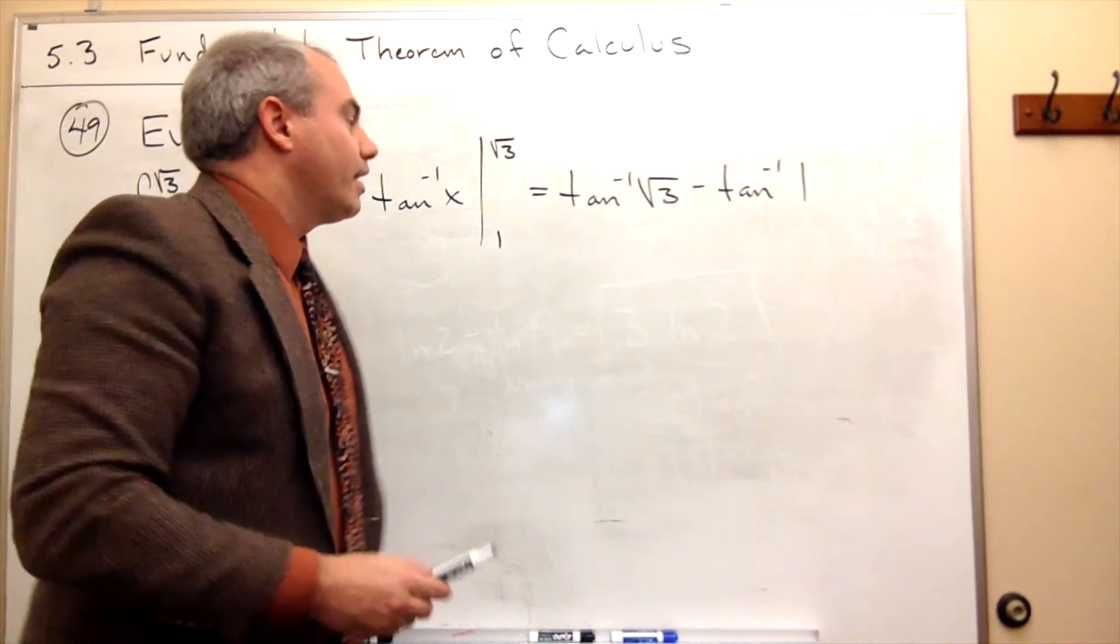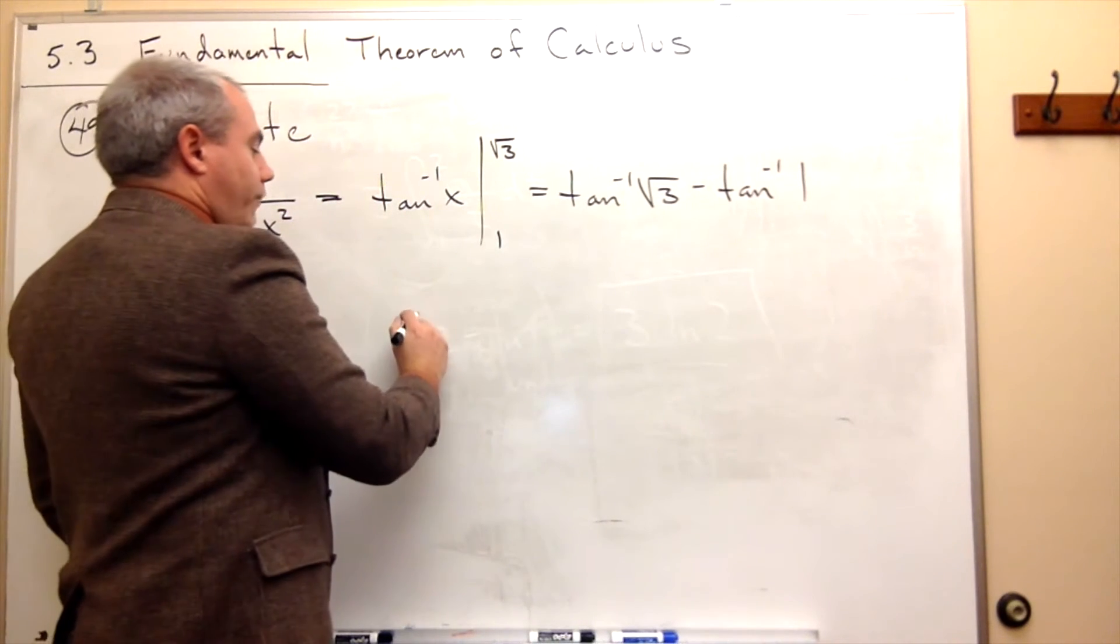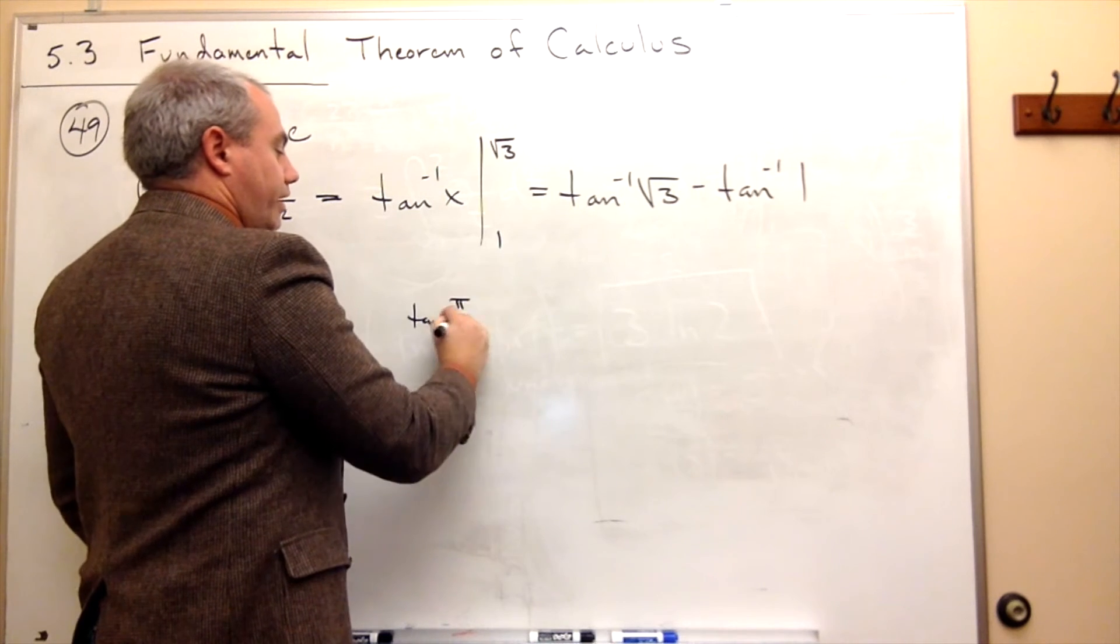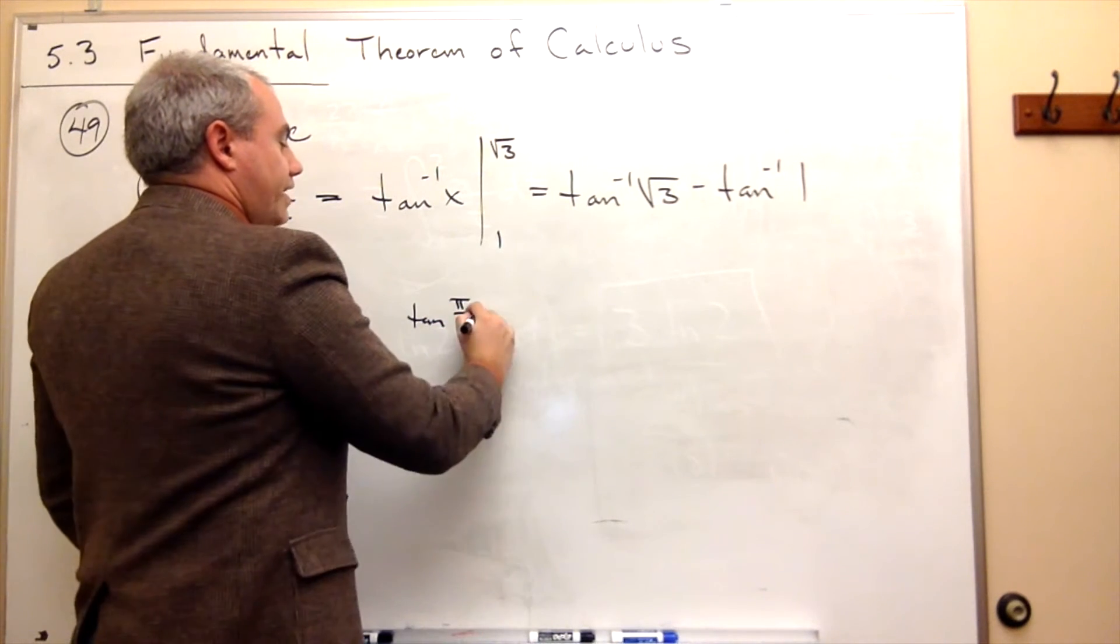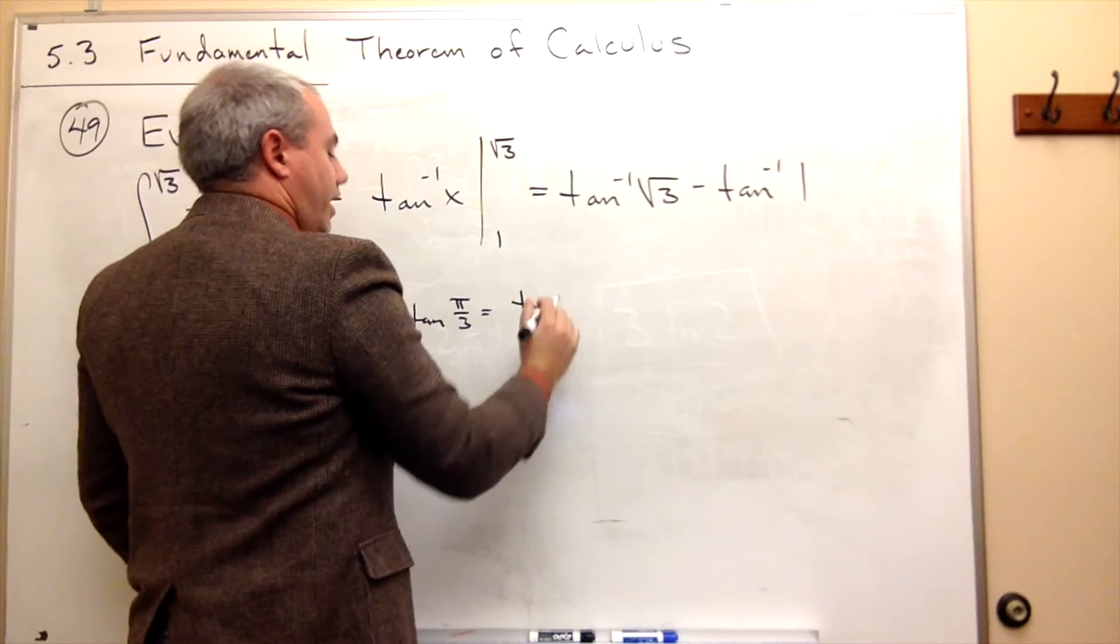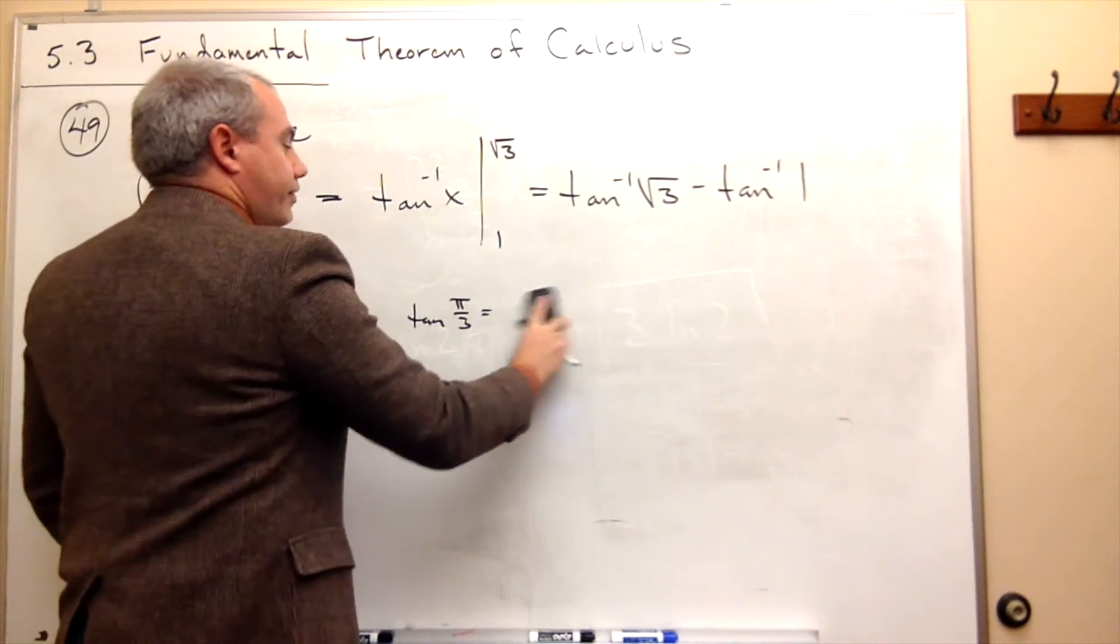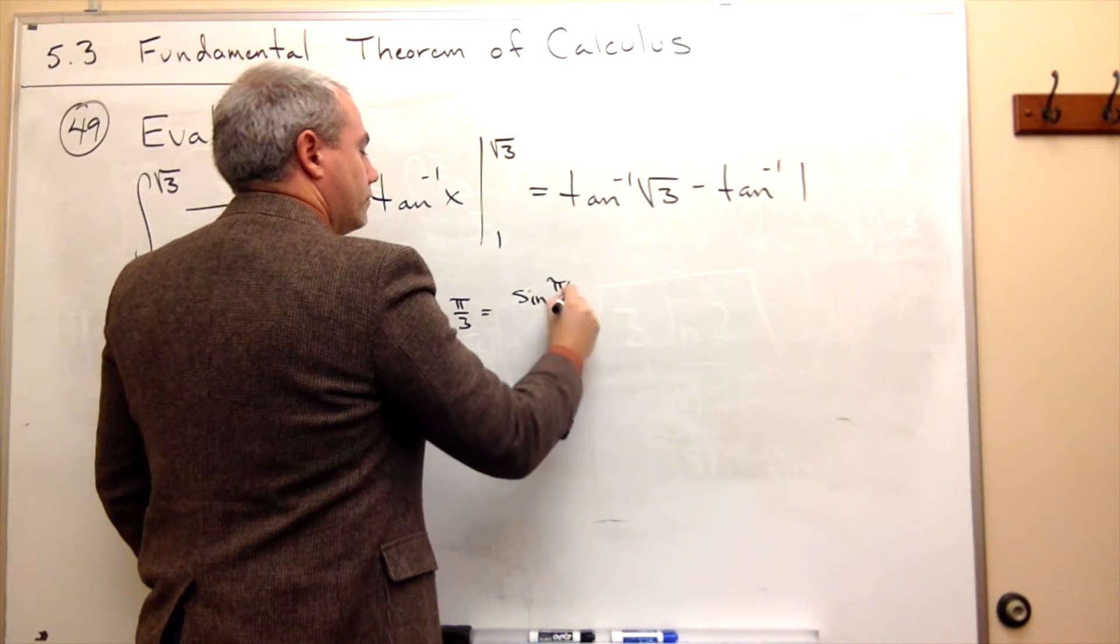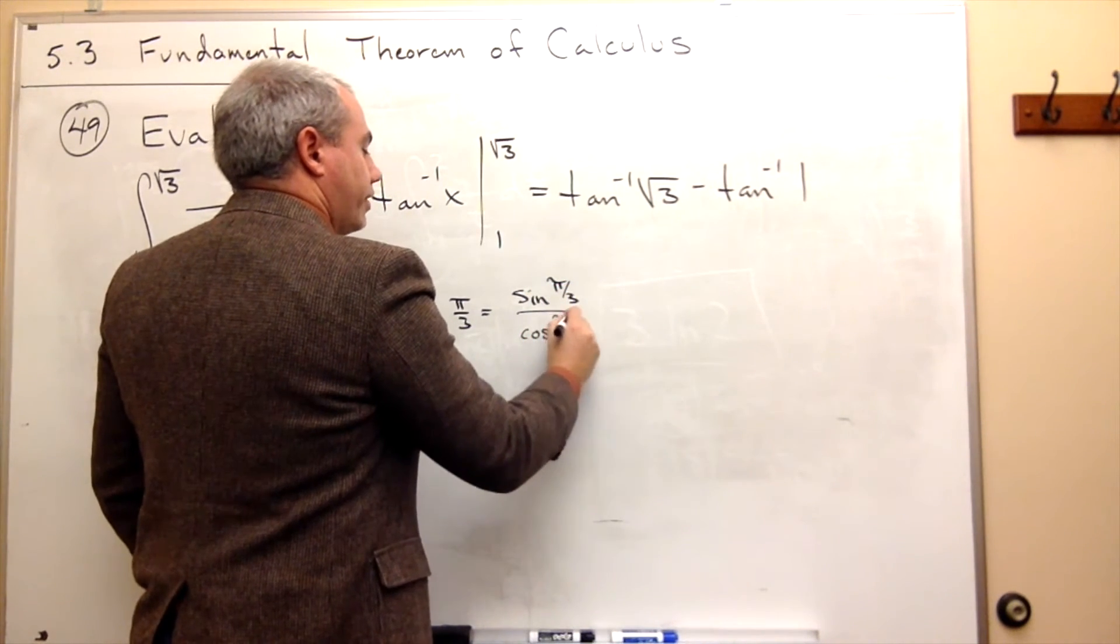But what's this guy? Well, let's see. What if we had tangent of, let's say, pi over 3? Well, tangent of pi over 3 is sine of pi over 3 over cosine of pi over 3.